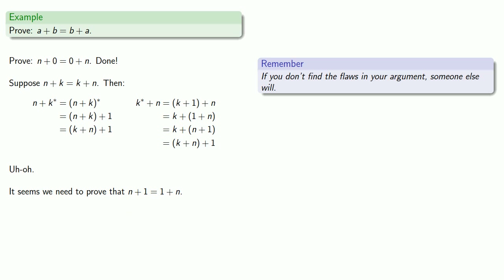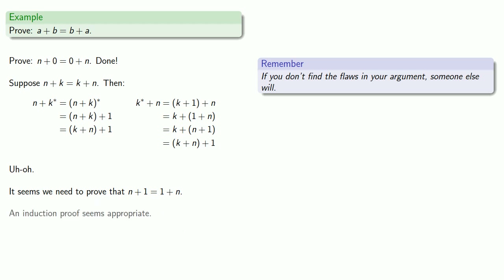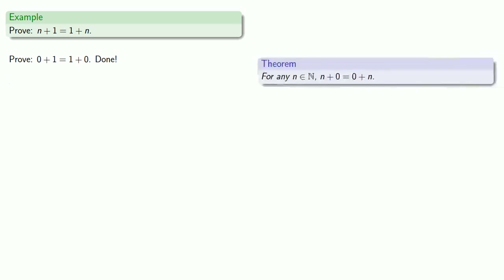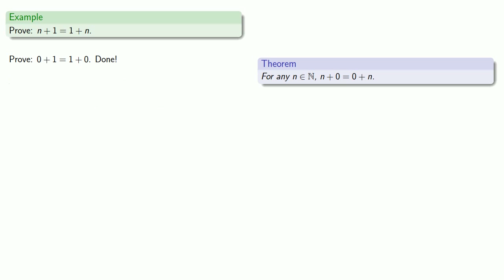So we should prove this by — well, an induction proof seems appropriate. We want to prove our base step: zero plus one equals one plus zero. We've already done that because we proved that zero does actually commute. And for our induction step, suppose our statement is true for k and that k plus one is equal to one plus k. Our goal is to show that k star plus one is equal to one plus k star.